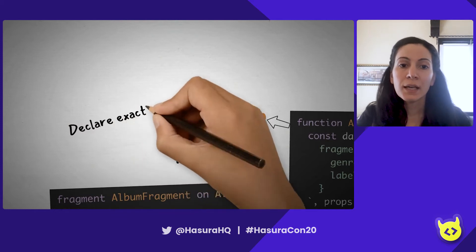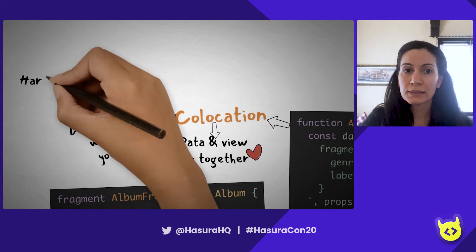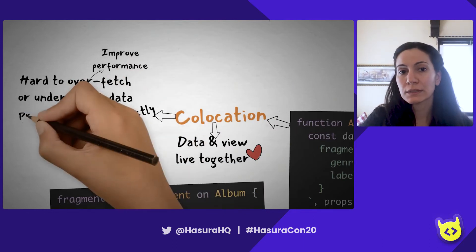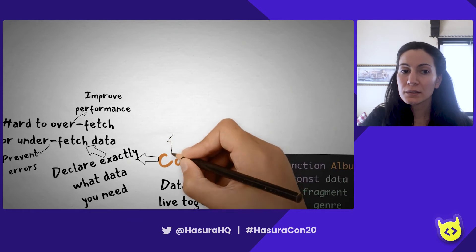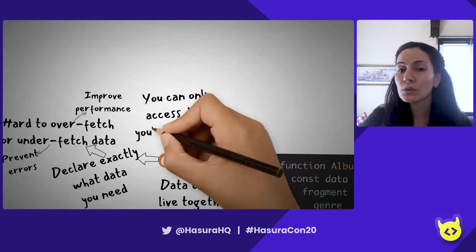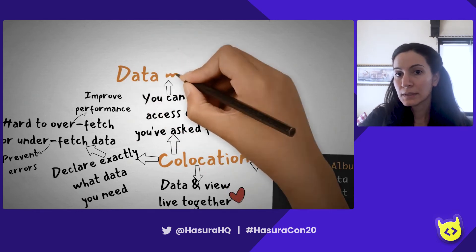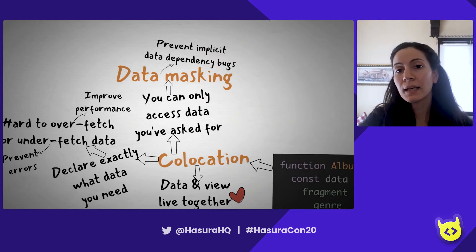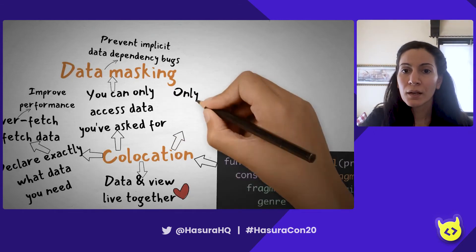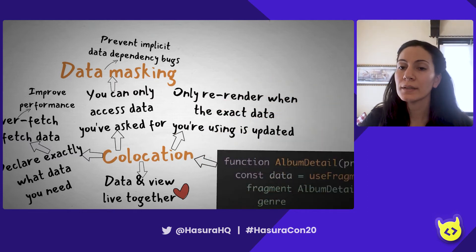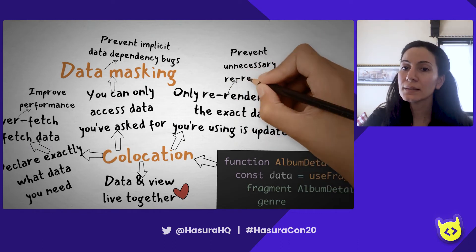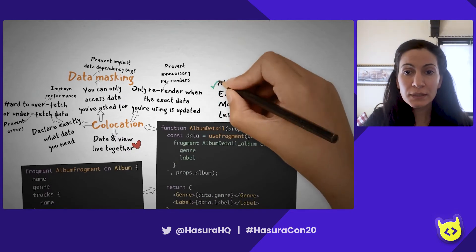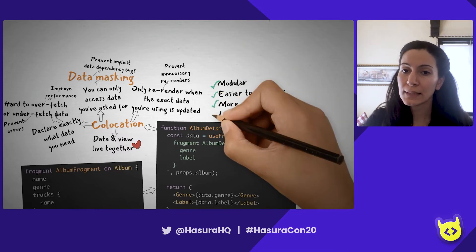Collocation has a bunch of benefits. First of all, we're declaring exactly what data we need, which makes it hard to overfetch or underfetch data. Not overfetching improves performance because you're not getting more than you need, and not underfetching prevents errors from missing data. Also, components can only access data that they've asked for — this is called data masking, and this prevents implicit data dependency bugs because components can't rely on other components for their data. Also, components only re-render when the exact data they're using is updated, which prevents unnecessary re-renders. So all in all, collocation makes our code more modular, easier to refactor, more performant, and less error prone.